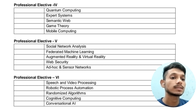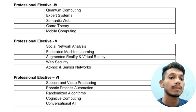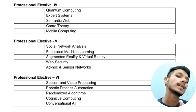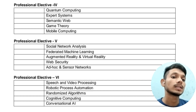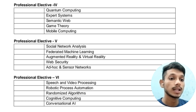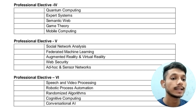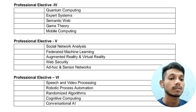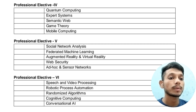In Professional Elective 4, the subjects are: Quantum Computing, Expert Systems, Semantic Web, Game Theory, and Mobile Computing. In Professional Elective 5, the subjects available are: Social Network Analysis, Federated Machine Learning, Augmented Reality and Virtual Reality, Web Security, and Sensor Networks. In Professional Elective 6, the subjects are: Speech and Video Processing, Robotic Process Automation, Randomized Algorithms, Cognitive Computing, and Conversational AI.